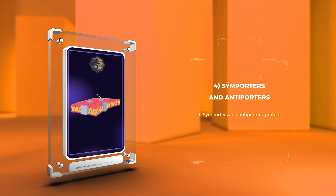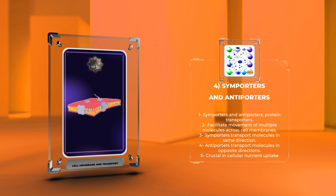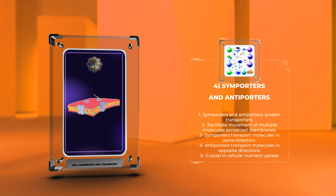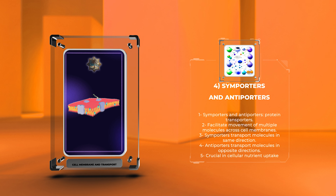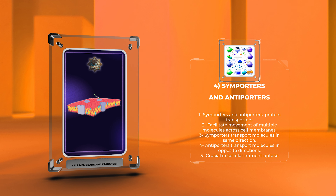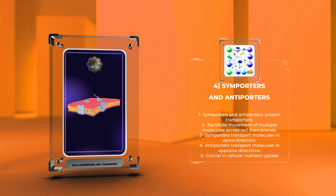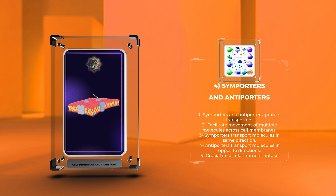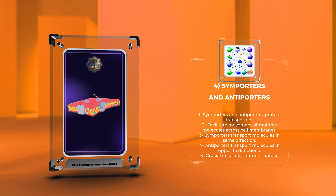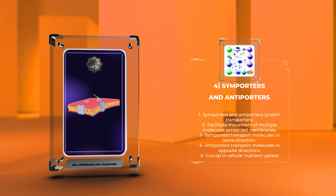Symporters and antiporters are protein transporters found within cell membranes that facilitate the movement of multiple molecules across the membrane in a coordinated manner. Symporters transport molecules in the same direction, while antiporters transport molecules in opposite directions. These transporters are essential in cellular nutrient uptake, ion homeostasis, and other cellular processes. Their proper functioning ensures the balance of essential molecules and ions across cell membranes, crucial for maintaining cellular integrity and function.